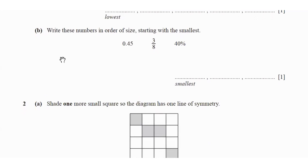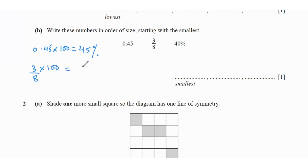Then it says write these up in order of size starting with the smallest. In such questions you can convert all the numbers either into decimals, percentages, or fraction form — depending on what the numbers are and how easy it is to convert them. For this case, I'm going to convert into percentages. 40% is already given. 0.45 times 100 is 45%. 3 over 8 times 100 is 37.5%. So smallest is 3 over 8, then 40%, then 0.45.